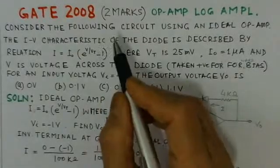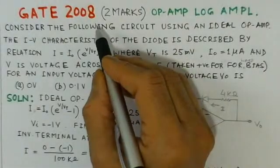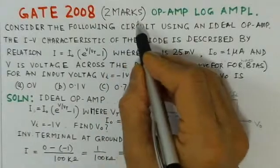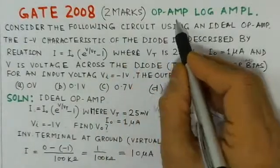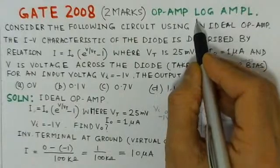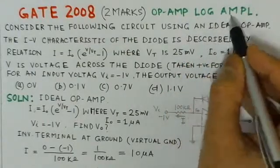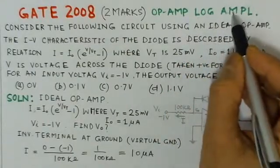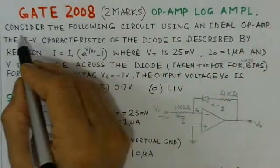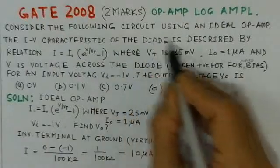The present problem considered here is from GATE 2008, worth two marks, and it is based on the operational amplifier application of the logarithmic amplifier. First we will read out the problem: consider the following circuit using an ideal op-amp.